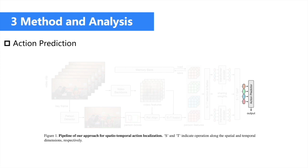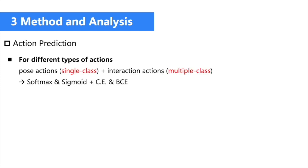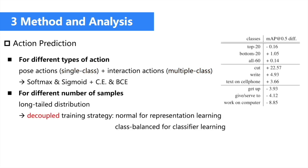For action prediction, we use softmax loss for single-class poses and sigmoid loss for multiple-class person and object interactions. For the long-tail distribution of AVA Kinetics, we use a decoupled training strategy containing a representation learning stage in the normal way and a classifier learning stage with class-balanced sampling. Results show that the bottom 20 classes achieve an improvement of 1 MAP while the top 20 classes almost do not drop.